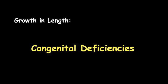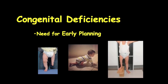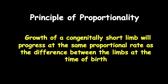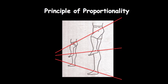Growth in length in congenital deficiencies is a different issue. With congenital deficiencies, you see a child when they're very young and the parents want to know what's going to be done and when. This can be predicted quite easily due to the principle of proportionality — the growth of a congenitally short limb will progress at the same proportional rate as the difference between the limbs at birth. As shown in this drawing, what you see is what you get: the adult will be in the same proportion as they were as an infant, allowing you to plan management from very early on.